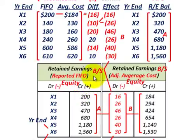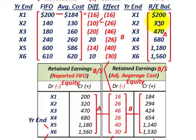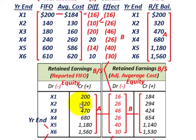When we convert our retained earnings from FIFO to average cost, we take our FIFO retained earnings for each year and apply the cumulative effect. For year X1, FIFO retained earnings were $200,000, and through year X6 they ended at $1,560,000. These are year-end amounts as reported under the FIFO inventory method.